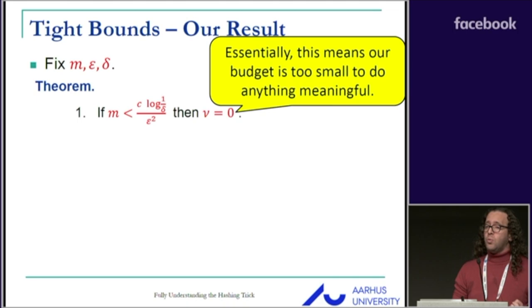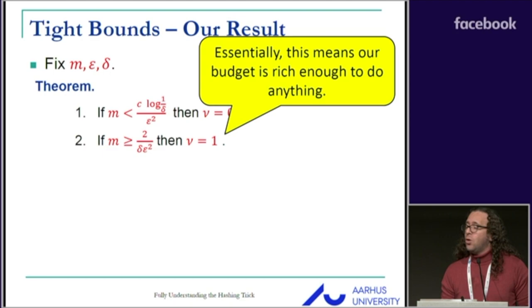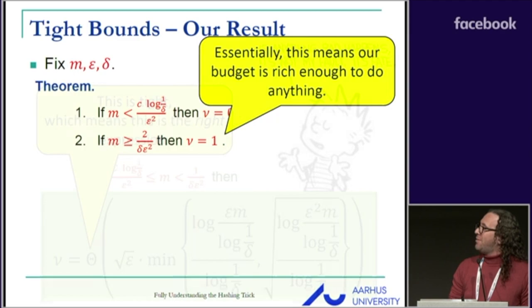What we show is that if M is too small, then basically we cannot give any guarantee. Feature hashing does not give any guarantees. If M is large enough, then we can give guarantees to any sort of vector.